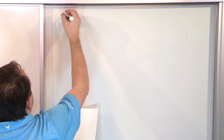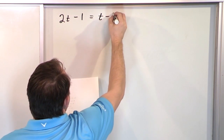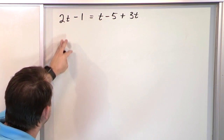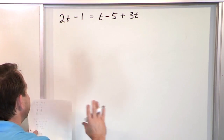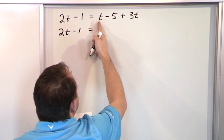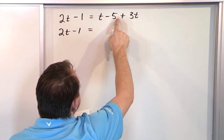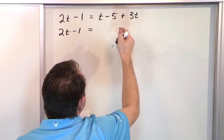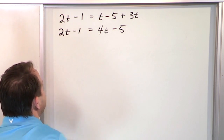Next: 2 times (t minus 1) equals t minus 5 plus 3 times t. We have t terms on the left and on the right. On the right, notice the negative sign is associated with 5 only — the t and 3t are both positive. Adding them gives 4t, so the right side becomes 4t minus 5.